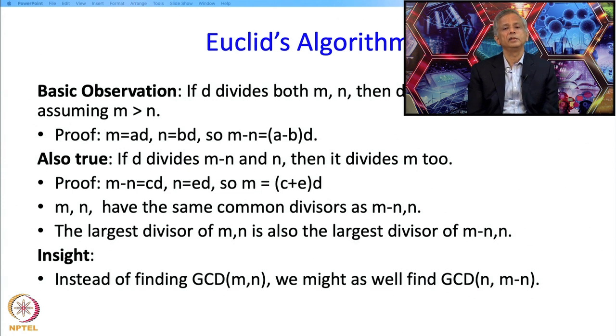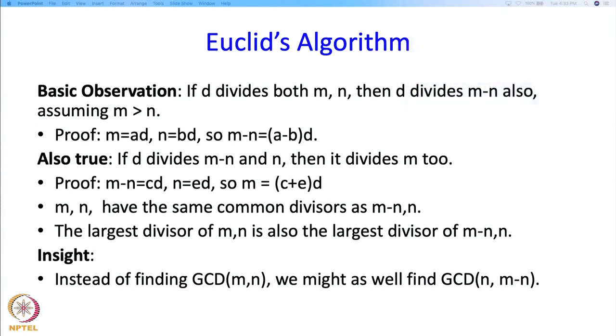Now this is useful in the following sense. If you look at the numbers m, n and n, m-n and we are assuming m is bigger than n, then we know that these two numbers are smaller than m, n. At least one of the numbers is smaller. So that means if you are going to do this by hand, we have gotten our numbers to be smaller and of course that helps when doing things by hand. But interestingly it helps also while doing things on a computer and we will see the reasons for it.